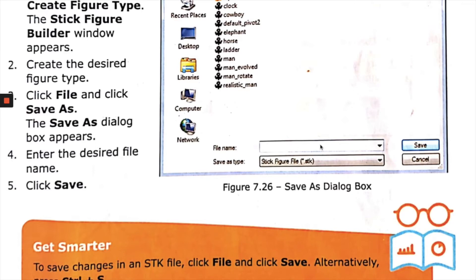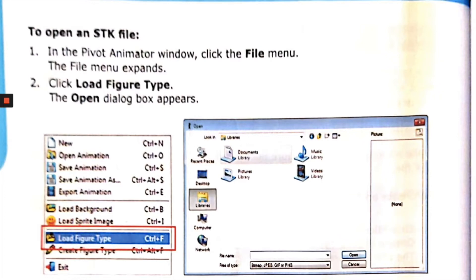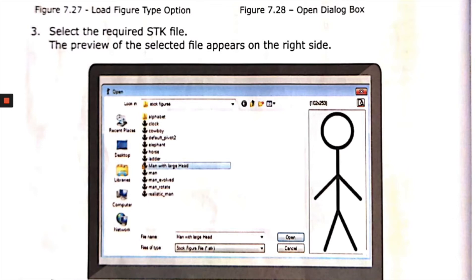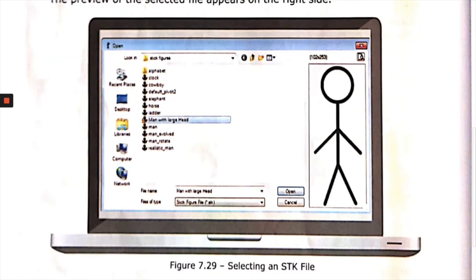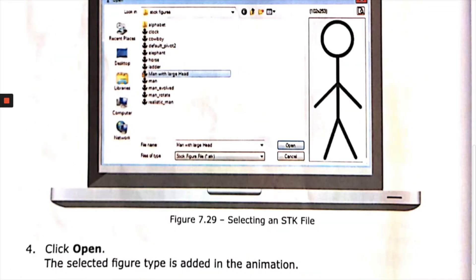To open an SDK file in the Pivot Animator window, click the File menu and click Load Figure Type. The Open dialog box appears, as shown in figures 7.27 and 7.28. Once you have created an SDK file and saved it, you can use it any number of times. Select the required SDK file — a preview of the selected file appears on the right side, as shown in figure 7.29.